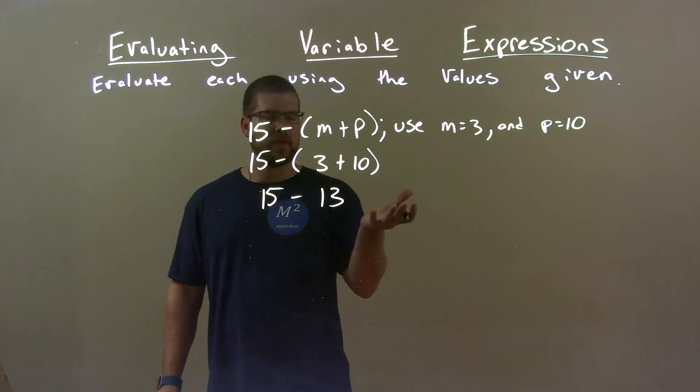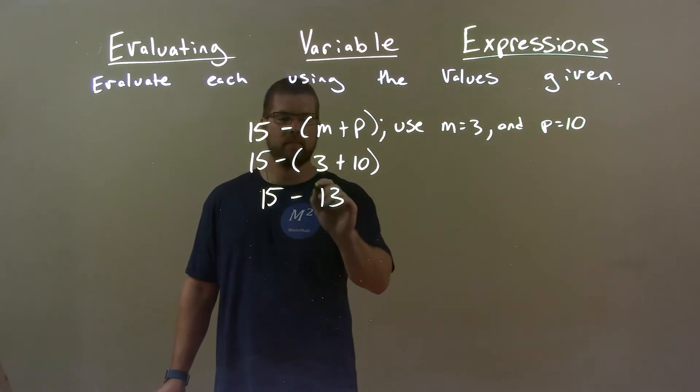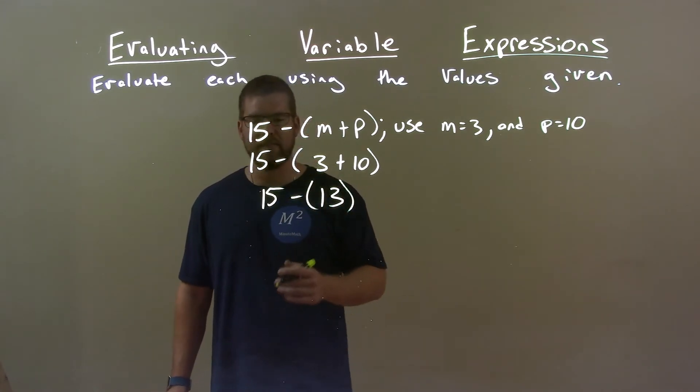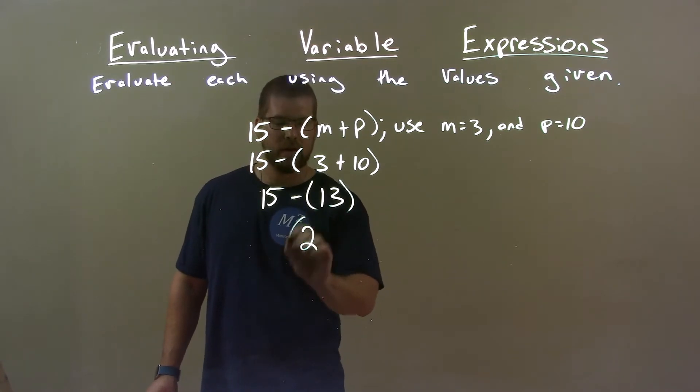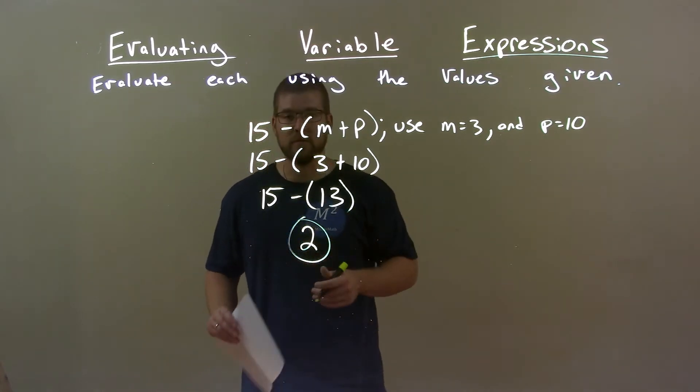Now, I don't really need the parentheses anymore because it's just one number. But if you really want to put it in, you can. 15 minus 13 is 2. And so, our final answer now is just 2.